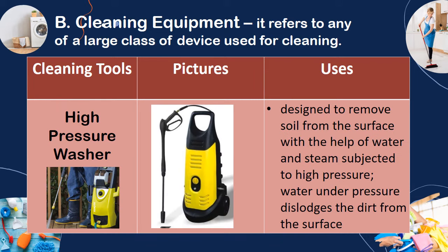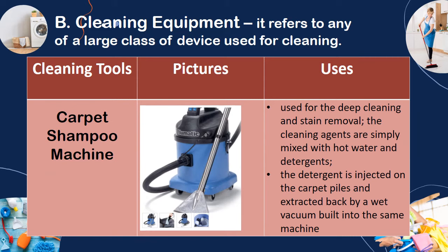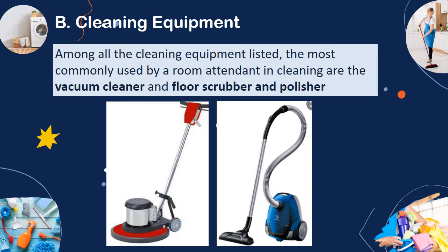The high-pressure washer is designed to remove soil from the surface with the help of water and steam subjected to high pressure. Water under pressure dislodges the dirt from the surface. The carpet shampoo machine is used for deep cleaning and stain removal. The cleaning agents are simply mixed with hot water and detergents; the detergent is injected onto the carpet piles and extracted back by a wet vacuum built into the same machine. Among all the cleaning equipment listed, the most commonly used by a room attendant are the vacuum cleaner and the floor scrubber and polisher.